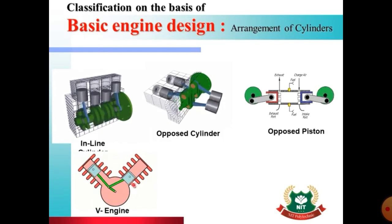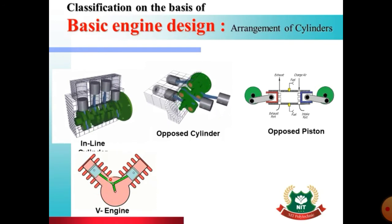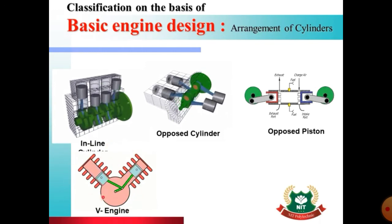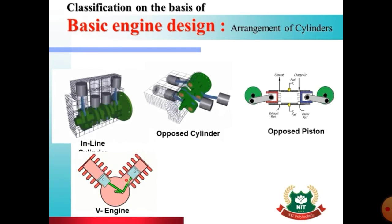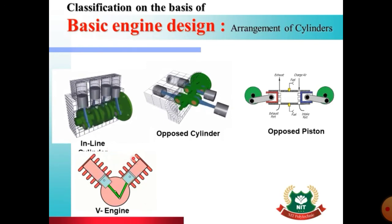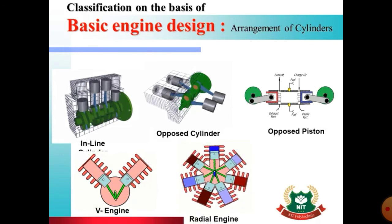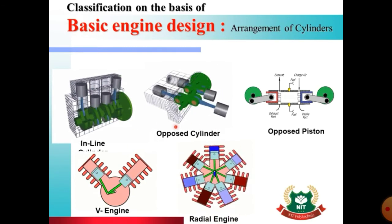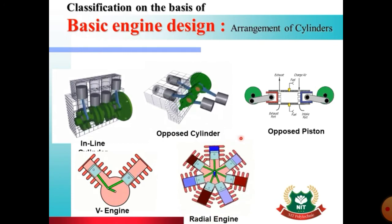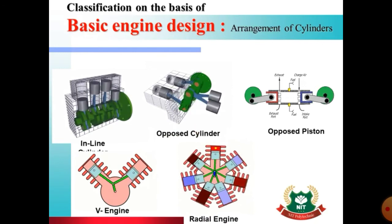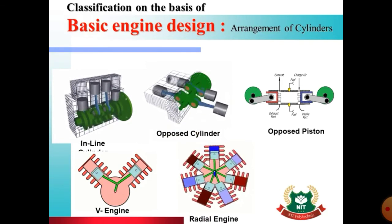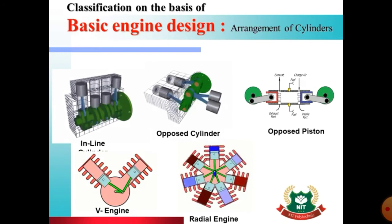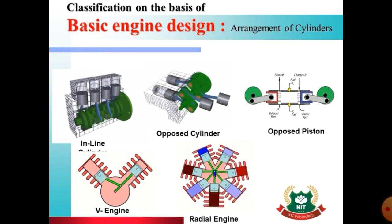V-twin engines, where two cylinders are arranged in a V-shape, are commonly used in cruiser bikes. V6 and V8 engines, with six and eight cylinders respectively, are used for heavy vehicles like sports cars. Radial engines have cylinders arranged radially in a circular position. These are used for light aircraft and some helicopters. This completes the classification of engines on the basis of design.